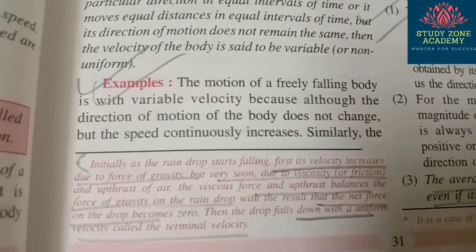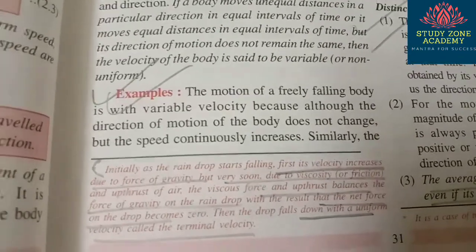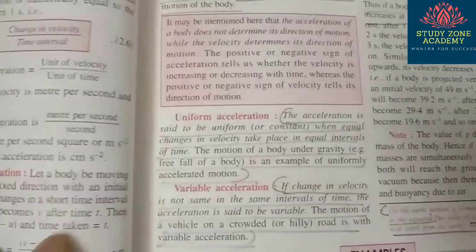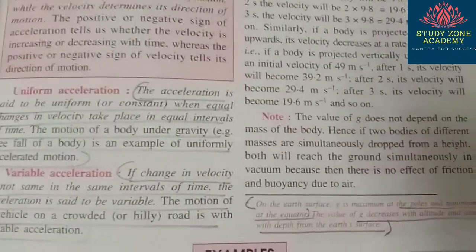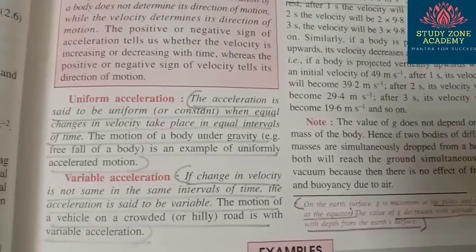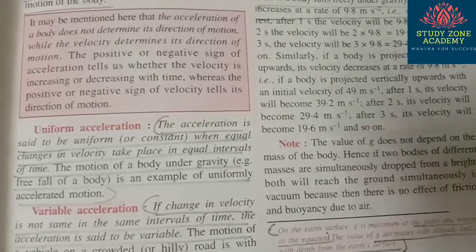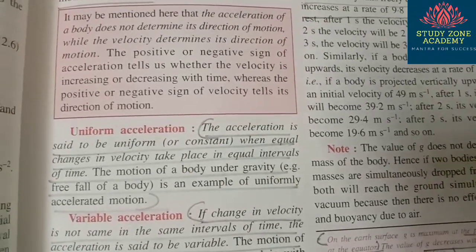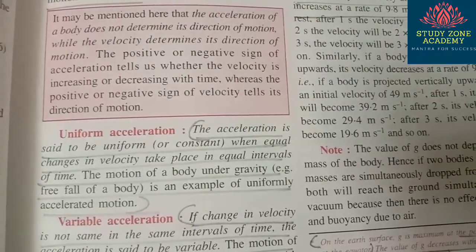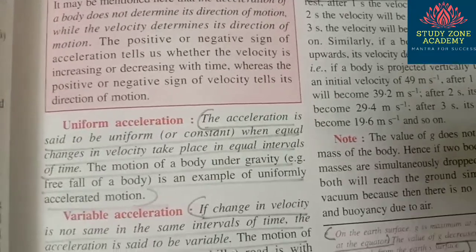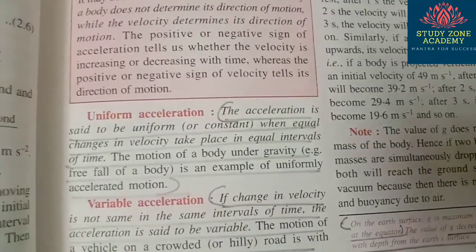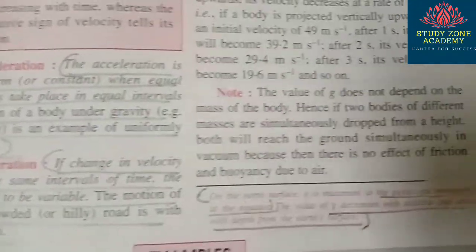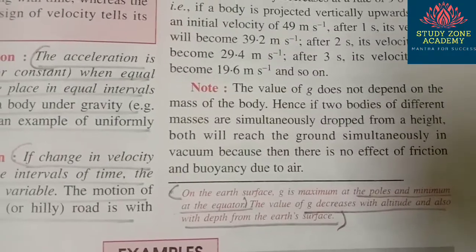Next question: the value of g on earth — where is it maximum and where is it minimum? It is maximum at the poles and minimum at the equator. Also: how does height or depth affect the value of g? The value of g decreases with altitude and also with depth from the surface.